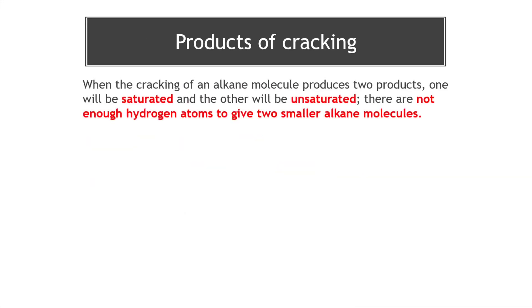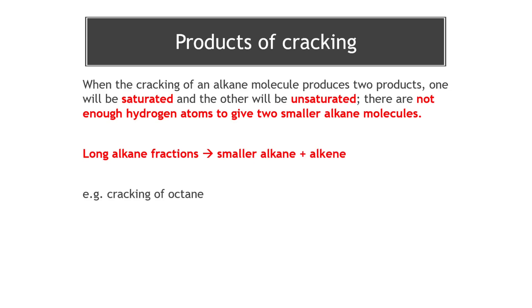As we've been discussing the products of cracking, we know we're producing two different products - the saturated and the unsaturated products. The reason is that there are simply not enough hydrogen atoms to give us two alkane molecules. If you break up an alkane, you're always going to produce an alkane and an alkene, because there aren't enough hydrogen atoms to make two alkanes. Here's another example when we're looking at the cracking of octane - we've got this long alkane producing smaller molecules: an alkene with a carbon to carbon double bond, and a smaller alkane, a fully saturated molecule.